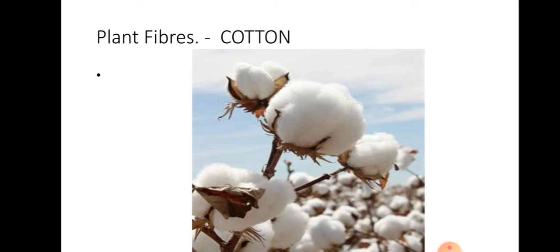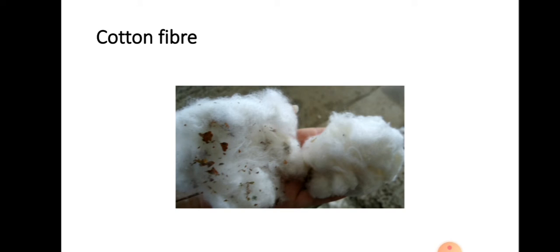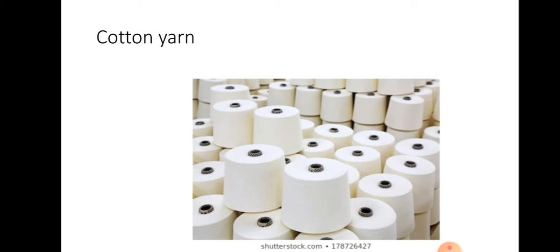Ginning is usually done by hand. We have to separate the cotton seeds and the fibers with our hands. But nowadays, many machines are there to do this ginning. This is the separated fiber from the cotton seeds.